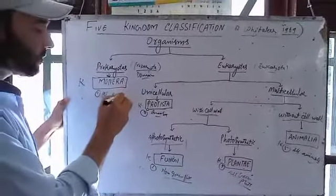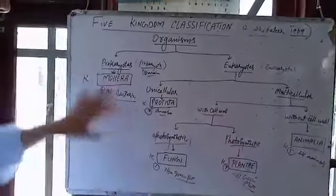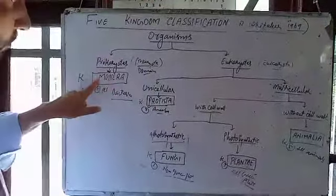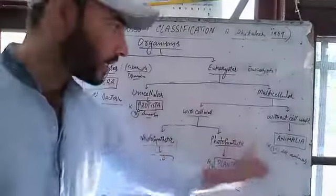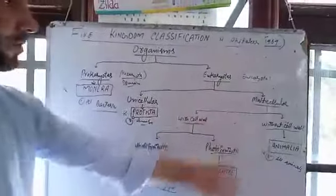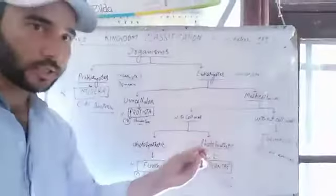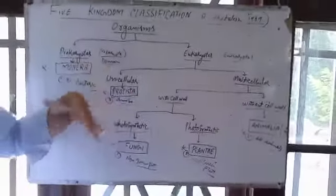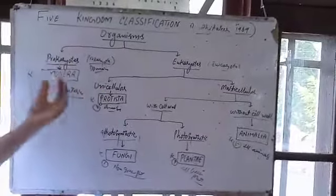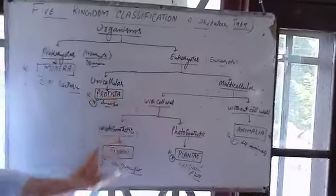So the five kingdom system of classification has five kingdoms: Kingdom Monera, Kingdom Protista, Kingdom Fungi, Kingdom Plantae, and Kingdom Animalia. Based on this table, you can differentiate between them using one or two characters. We will study each kingdom and its characters with examples in further lessons.